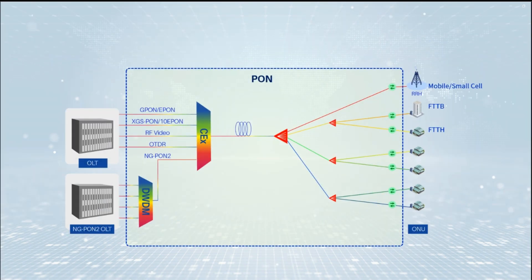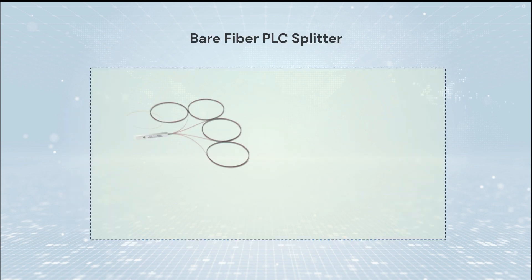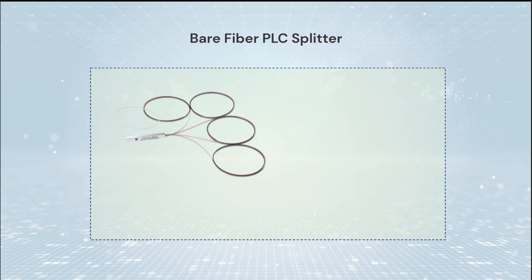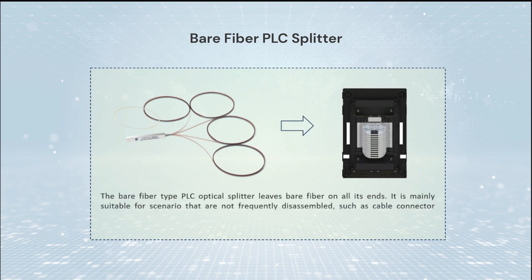PLC splitter is based on planar light wave circuit technology, which is widely used in PON. There are different package types of PLC splitters to meet different application requirements. The bare fiber type PLC optical splitter leaves bare fiber on all its ends. It is mainly suitable for occasions that are not frequently disassembled, such as cable connector boxes and fiber distribution trays.